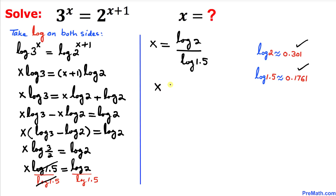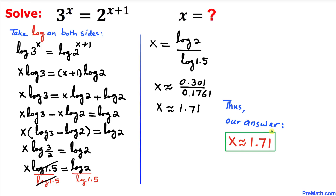So we can write x is approximately equal to 0.301 divided by 0.1761, and thus our solution turns out to be x is approximately equal to 1.71. Thanks for watching and please don't forget to subscribe to my channel for more exciting videos. Bye!